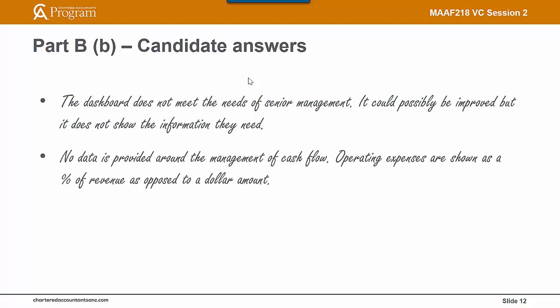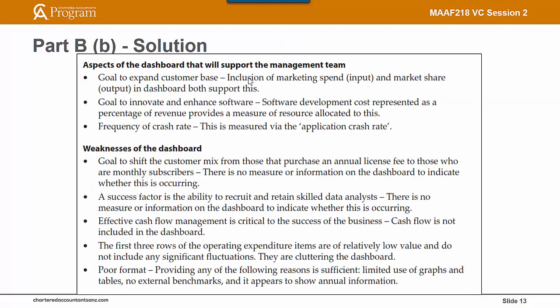The next candidate answer: 'No data is provided around the management of cash flow.' That's good — a key success factor is effective management of cash flow, and there's no cash flow information in the scorecard. Note that when I use the term dashboard or scorecard, they refer to the same thing. Another point made is that operating expenses are shown as a percentage of revenue as opposed to a dollar amount — that wouldn't be accepted, as it's common practice to show items in a scorecard as a percentage of revenue since it makes comparison easier. I'll leave the full suggested solution for you to read in your own time — you can press pause if you'd like to read it now.